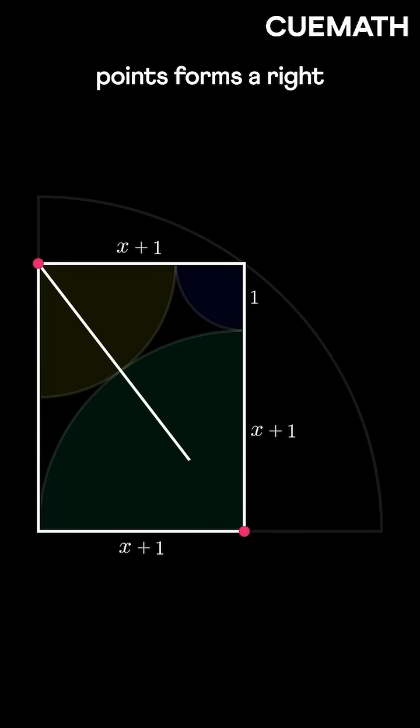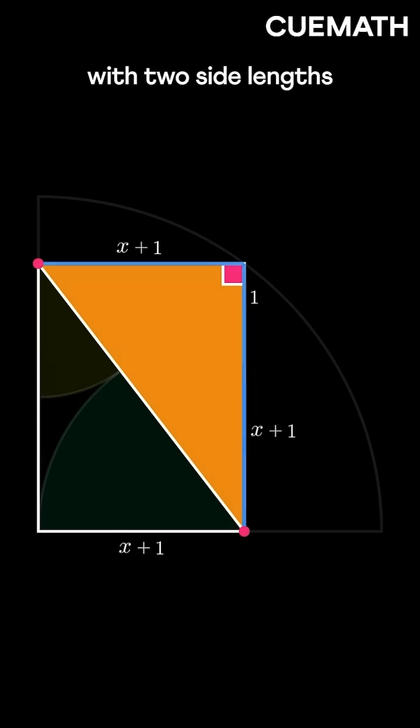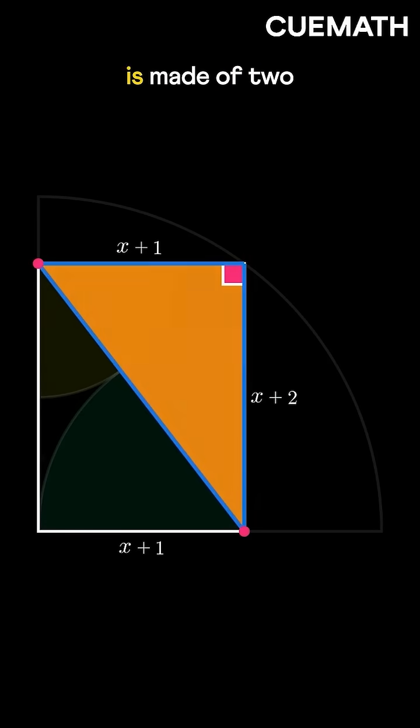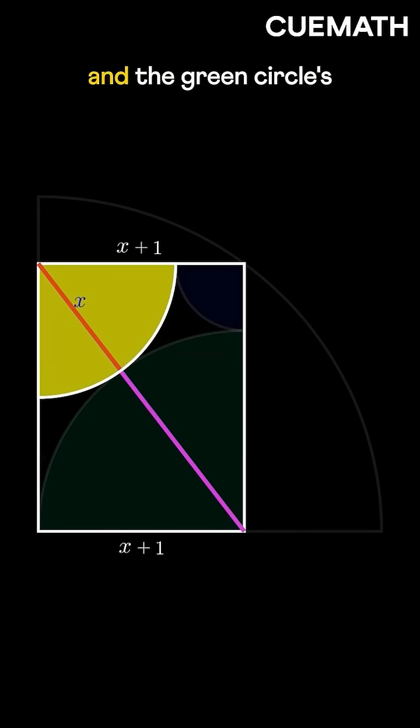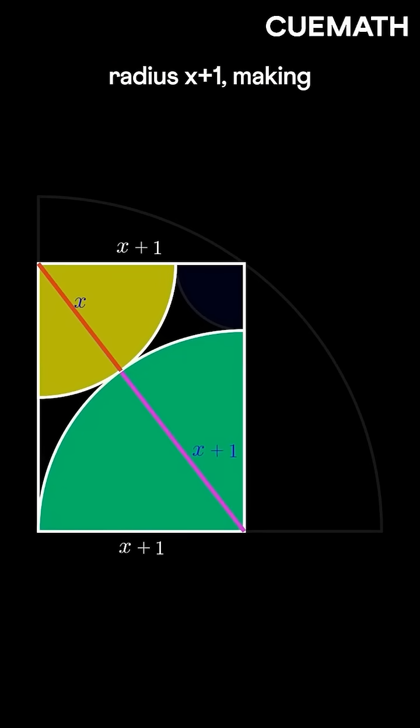Now joining these two points forms a right-angled triangle with two side lengths x plus 1 and x plus 2. The third side is made of two parts, the yellow circle's radius x and the green circle's radius x plus 1, making the total 2x plus 1.